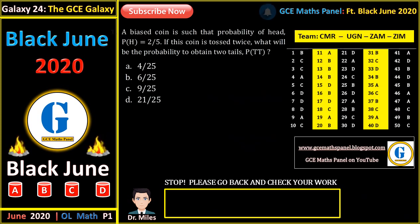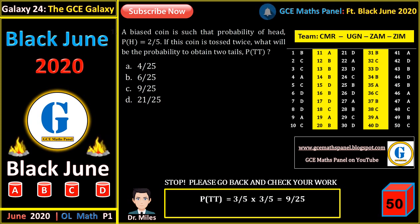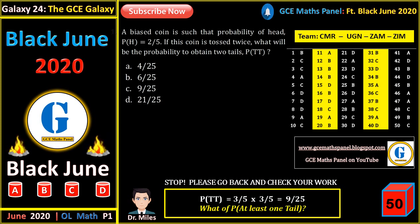A biased coin is such that the probability of a head is 2/5. If this coin is tossed twice, what is the probability of obtaining 2 tails? Since the events are independent, the probability of 2 tails equals probability of tail times probability of tail. The probability of a tail is 1 minus 2/5, which is 3/5. So 3/5 times 3/5 gives 9 on 25. The key here is C.